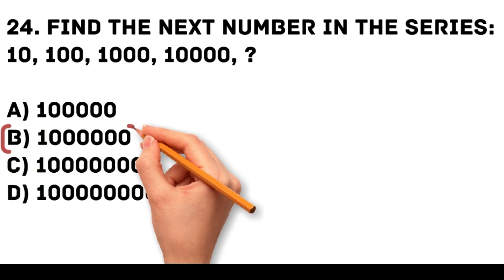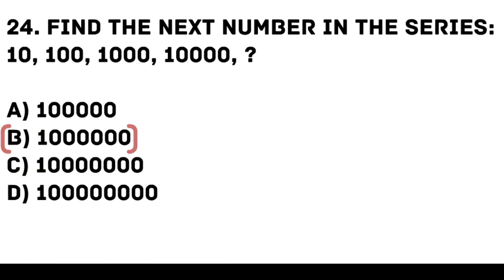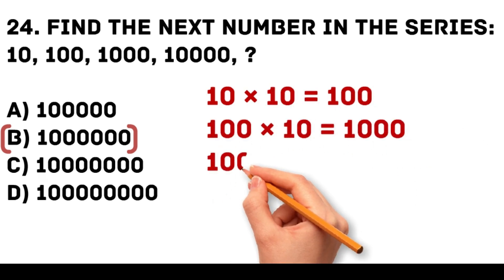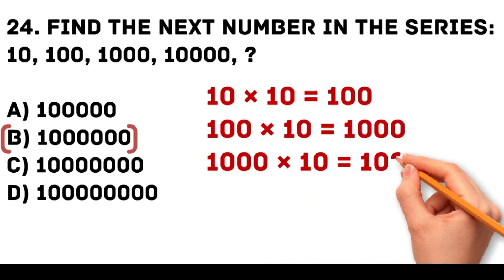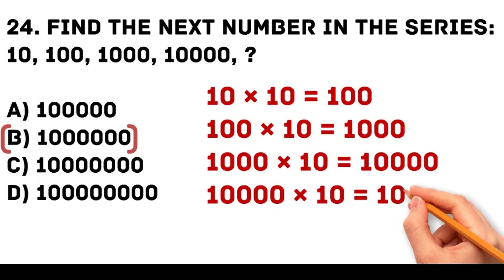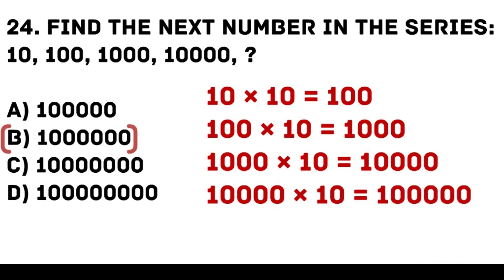Answer: B. 1,000,000. Each number in the series is multiplied by 10. 10 times 10 is equal to 100. 100 times 10 is equal to 1,000. 1,000 times 10 is equal to 10,000. 10,000 times 10 is equal to 100,000.